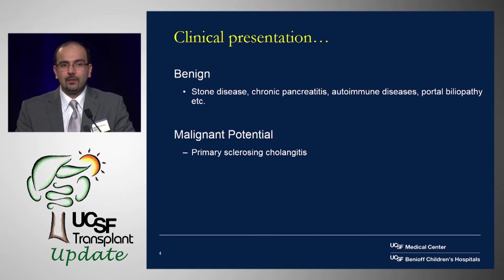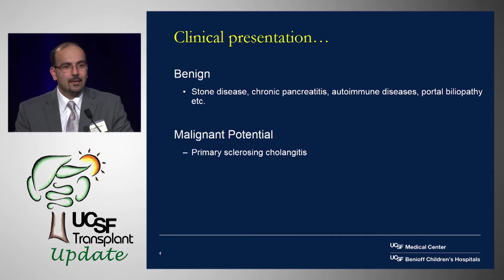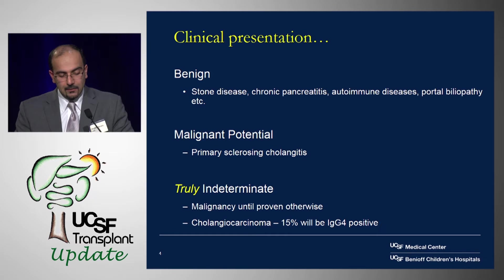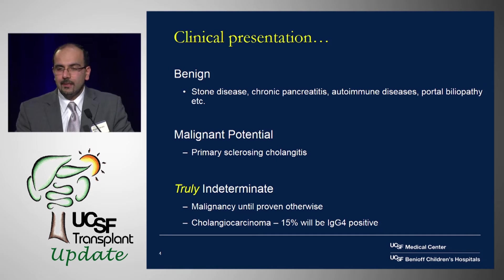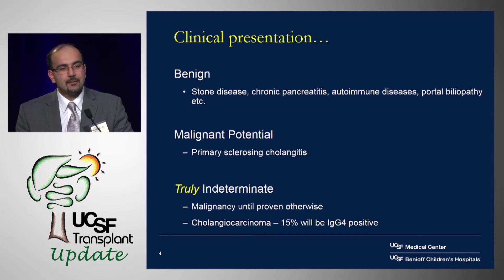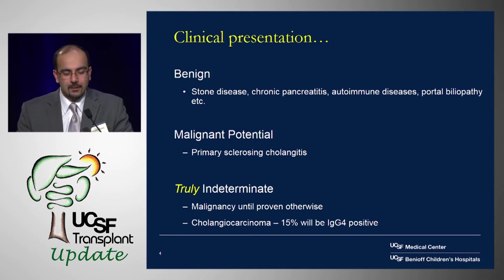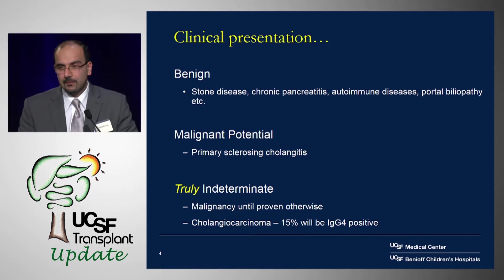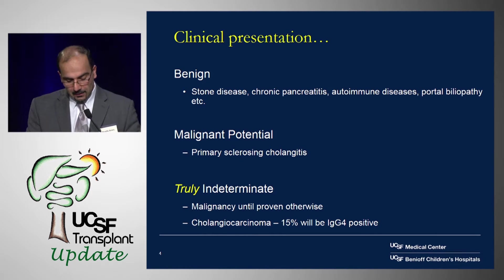In PSC patients there is the ongoing saga of potential malignancy — you're always wondering, am I missing something? Truly indeterminate strictures should be considered malignant until proven otherwise. Cholangiocarcinoma and IgG4 seem to have an overlap that sometimes gets overlooked, and patients get diagnosed with autoimmune cholangiopathy when it turns out to be cholangiocarcinoma. The reason is because 15% of cholangiocarcinomas will be IgG4 positive.